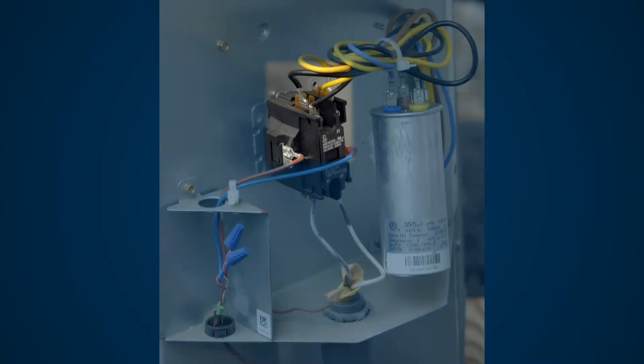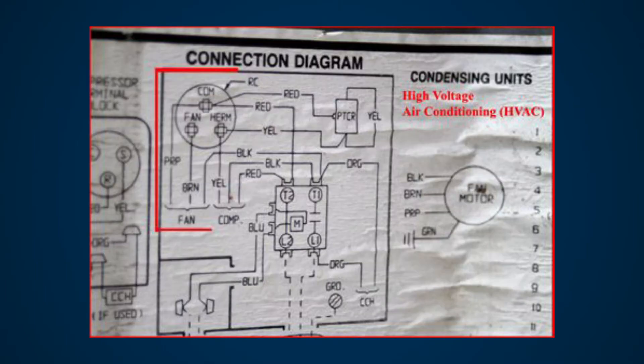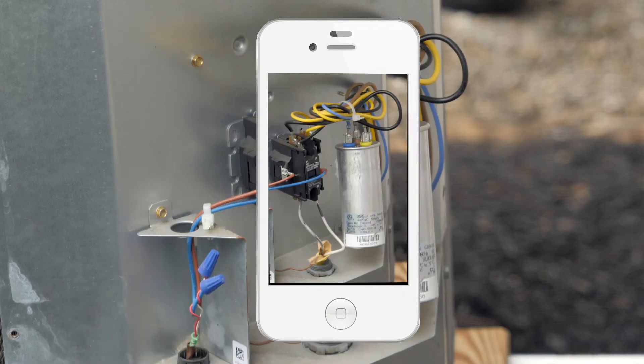If you don't remember where the wires were on the capacitor, you can trace the wires back to the correct locations using the wiring diagram. It's also a great place to take a picture with your phone.